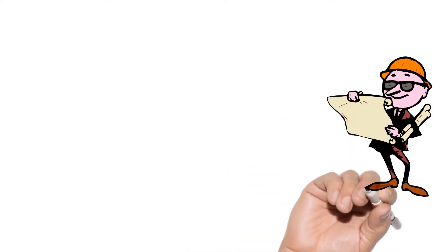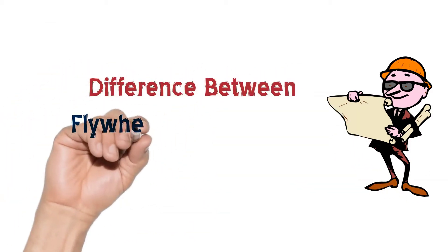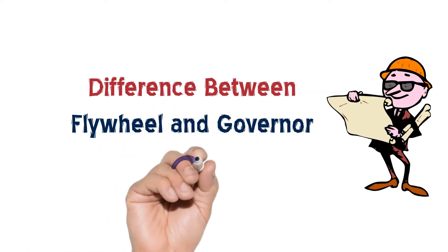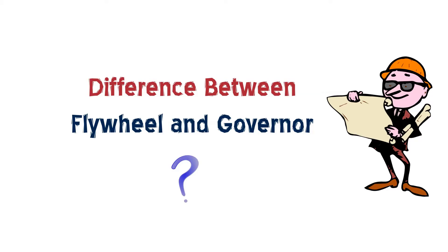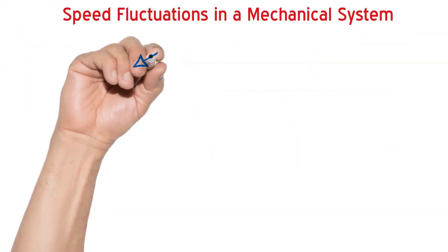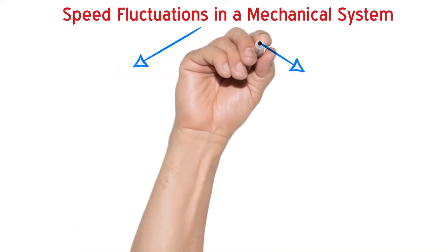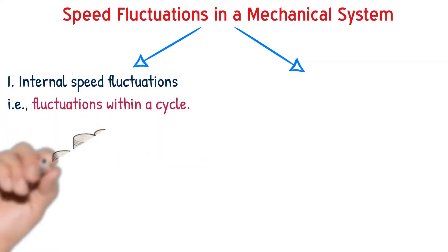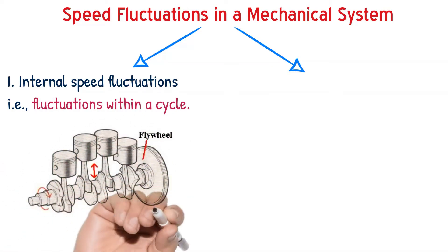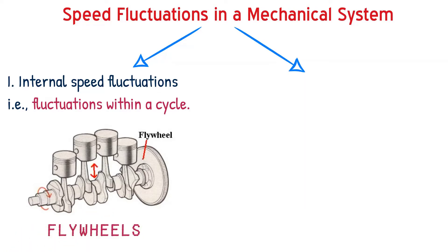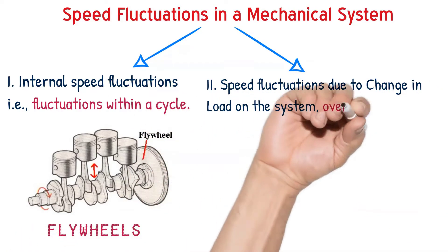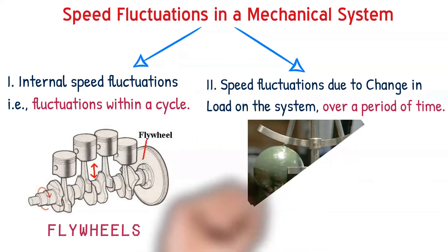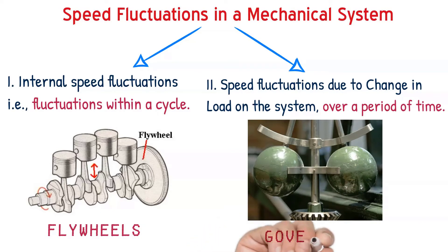In this difference between series, we shall discuss the key differences between flywheel and governor. In a mechanical system, speed fluctuations are of two types. One is internal speed fluctuations — in other words, fluctuations within a cycle — that's where flywheel comes into picture. The other type involves speed fluctuations due to change in load on the system, which happens over a period of time — that's where governors are used. We will be discussing those two terms very elaborately going forward.